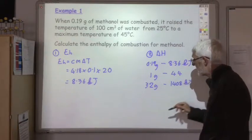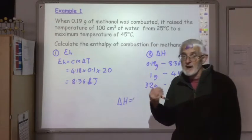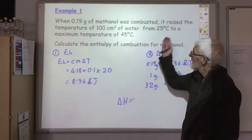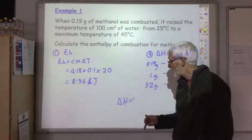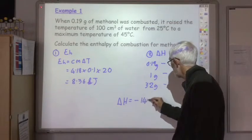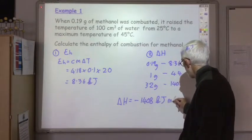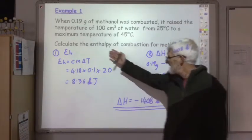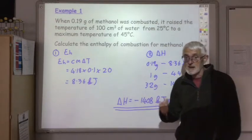Don't leave the answer like that - write delta H equals, and it's only at this very last stage to worry about the sign. The temperature rose so it's an exothermic reaction, so the delta H value should be negative 1408 kilojoules. So the first stage you did at National 5, the second stage is the extra step we have to do at Higher.